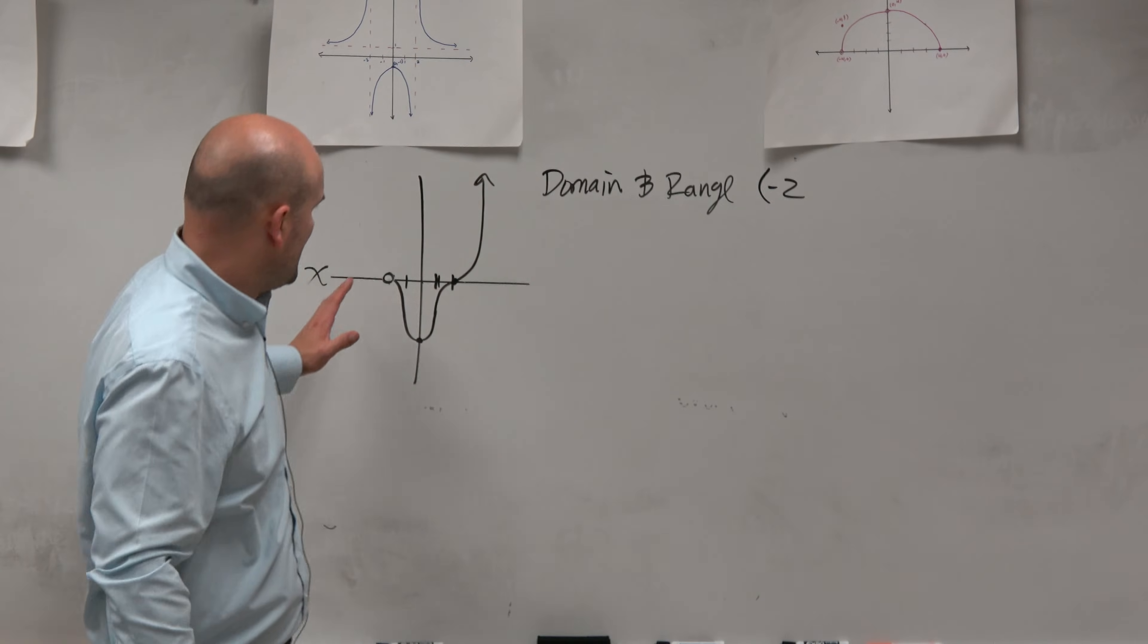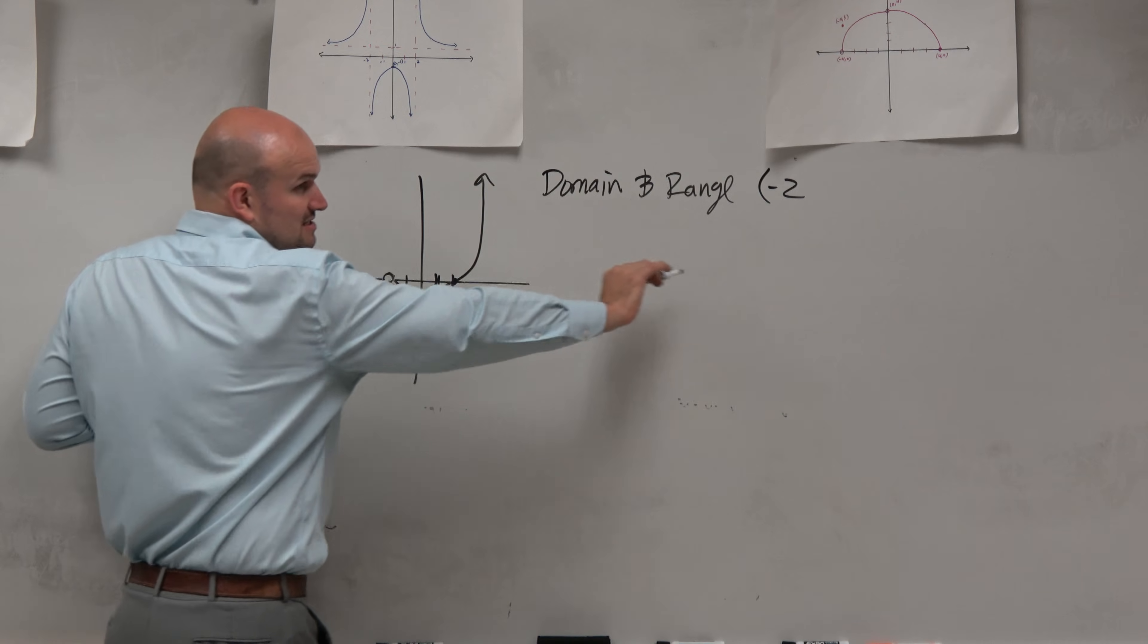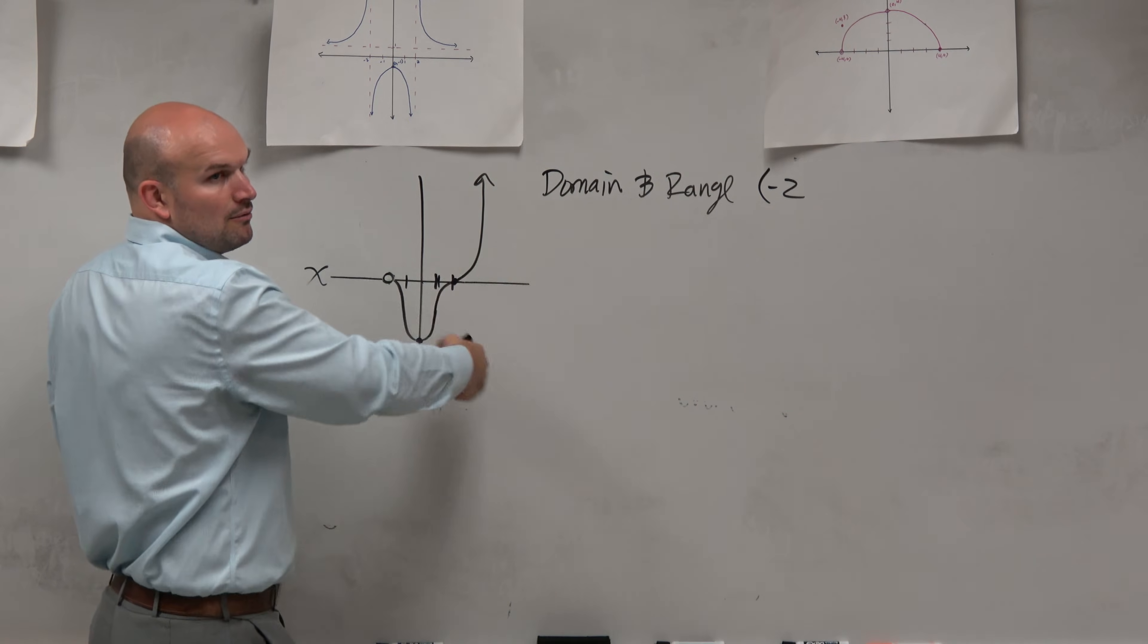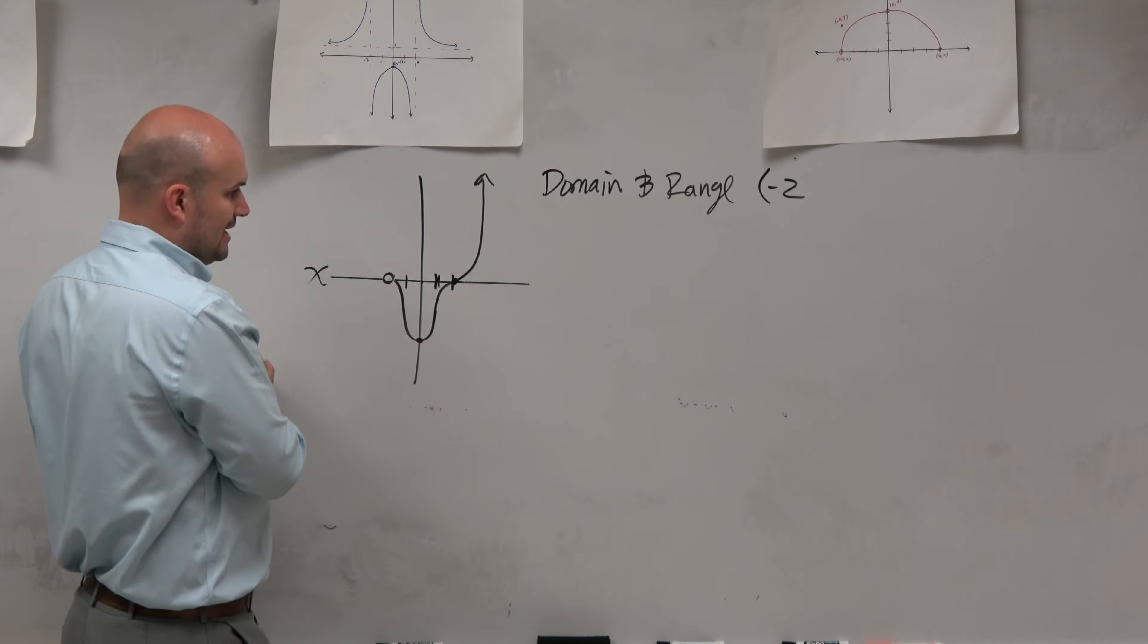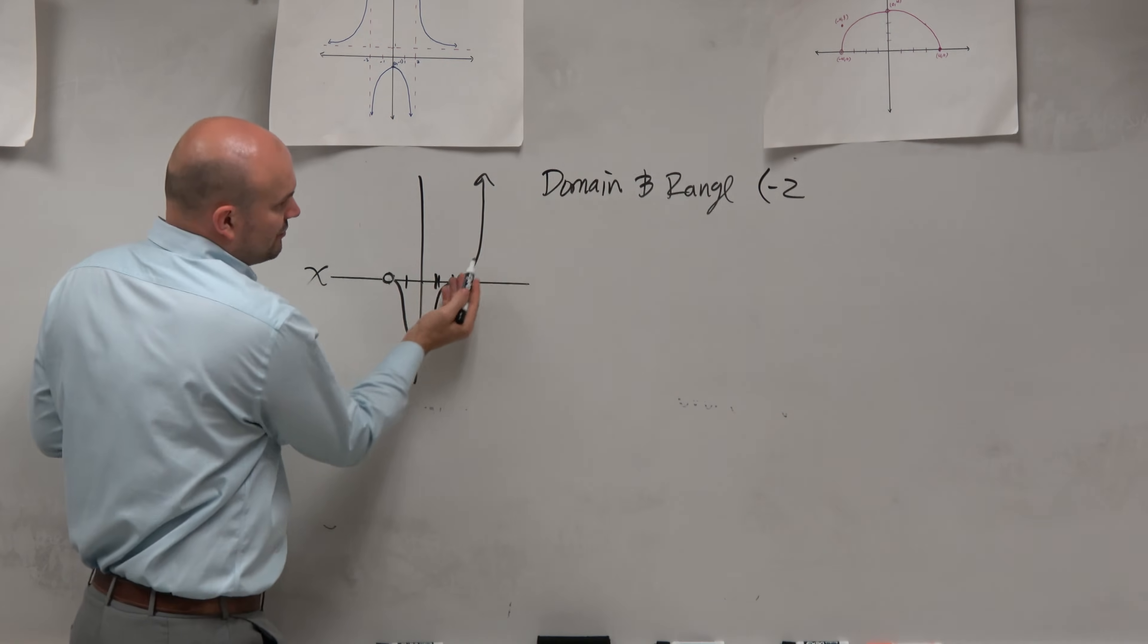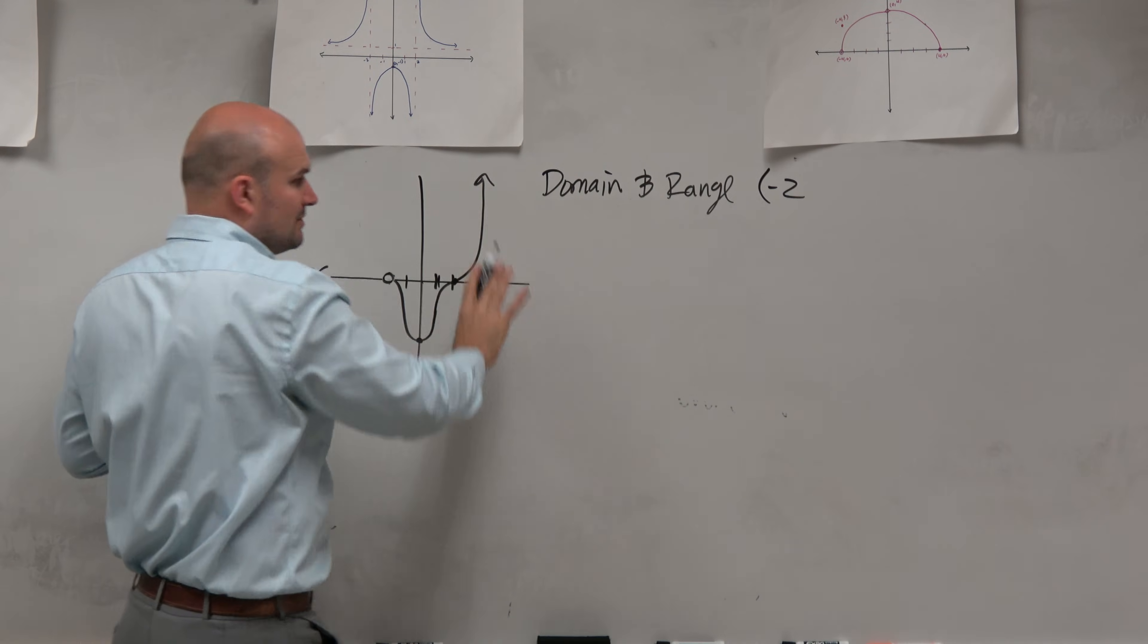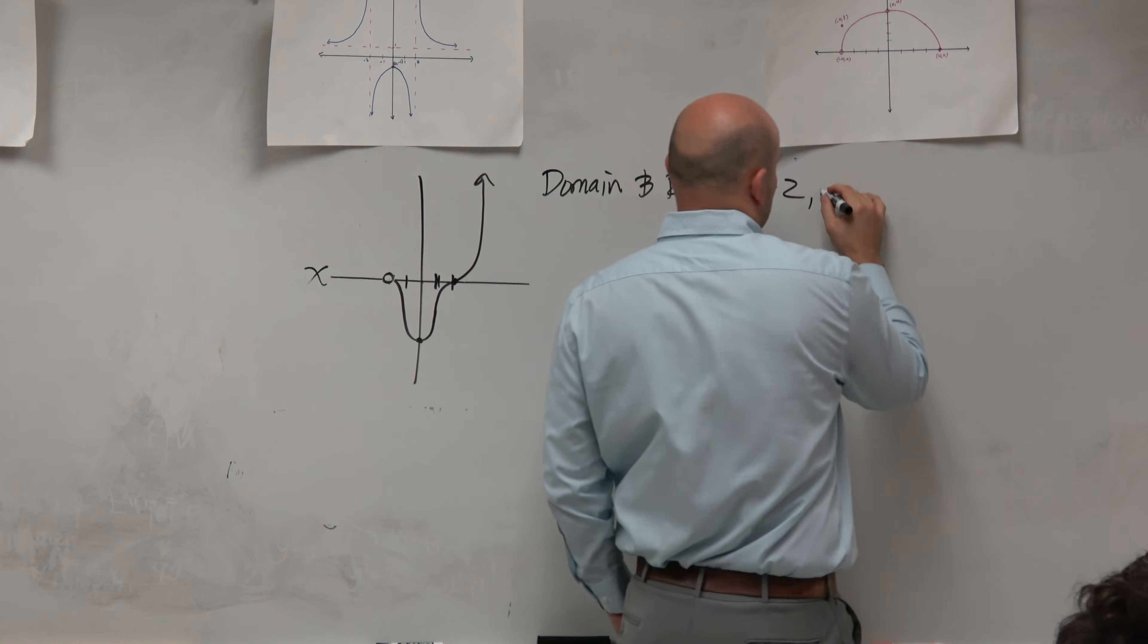And then we want to say, from negative 2 continuing down the x path, everything else is continuous. So we're not worried about any other discontinuities. And then we basically want to say, well, how far is it going on to the right? Well, as this graph shoots up, it's still going to the right. It's still pushing to the right. So that's going to go all the way to infinity.